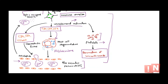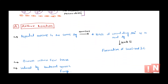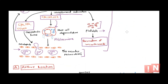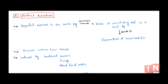When it comes to type 3 hypersensitivity, there are basically two types: localized and systemic. In the localized type, wherever the antigen has entered, deposition occurs at that site and tissue injury takes place there. In the systemic type, the antigen-antibody complex circulates throughout the body and can deposit anywhere.